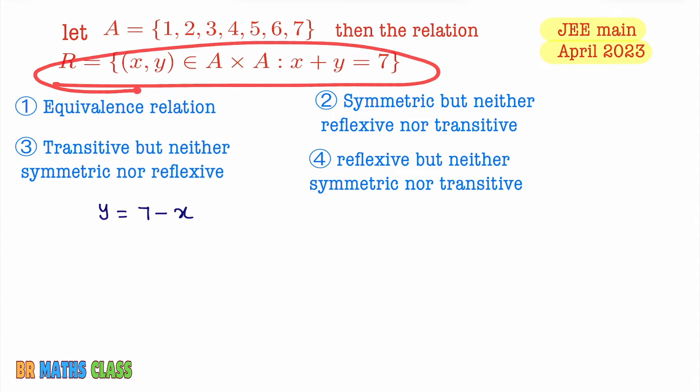Now I will write this relation into roster method R equals. See, X is from set A, Y is also from set A. We know that y = 7 - x. You take x = 1 first. When you put x = 1 what is Y value? Y value is 7 - 1 = 6. So first ordered pair is (1,6). You put x = 2 in this, then y = 7 - 2 = 5. So (2,5).